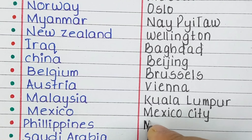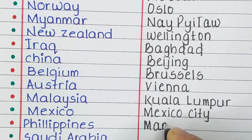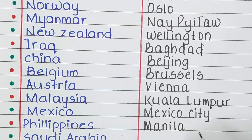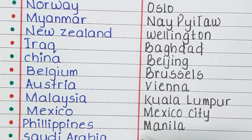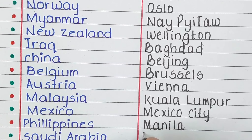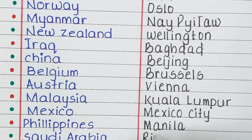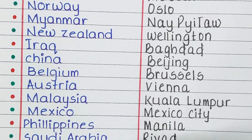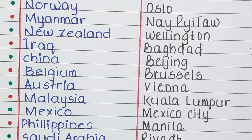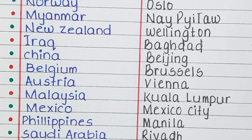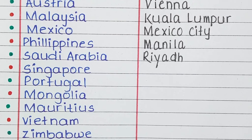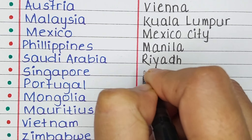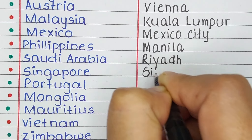Next country in our list is Philippines. The capital of the Philippines is Manila. Next is Saudi Arabia. The capital of Saudi Arabia is Riyadh.